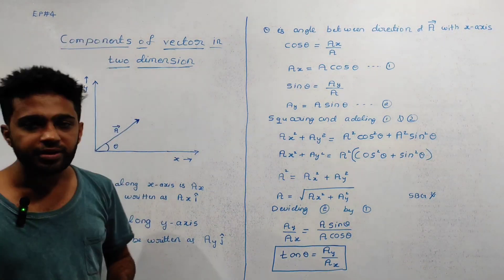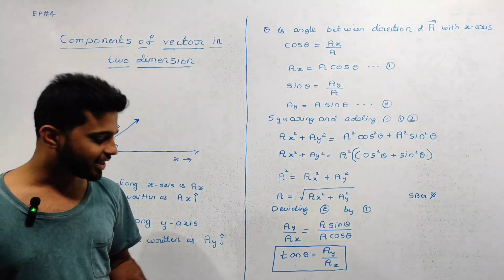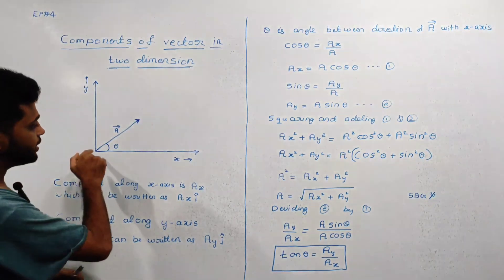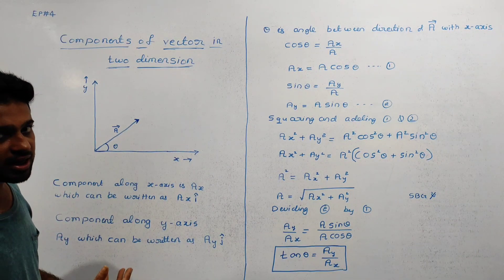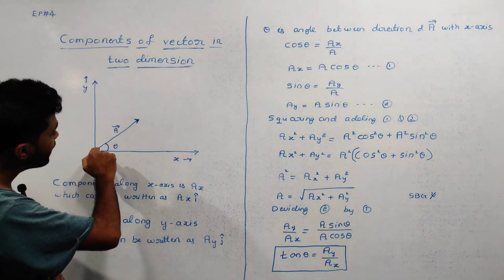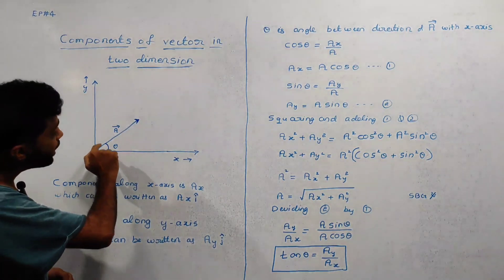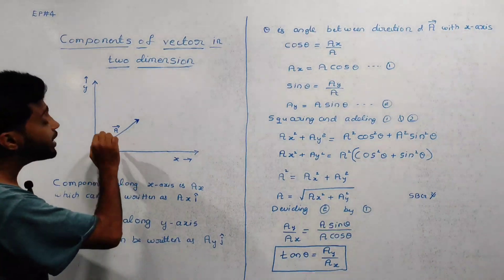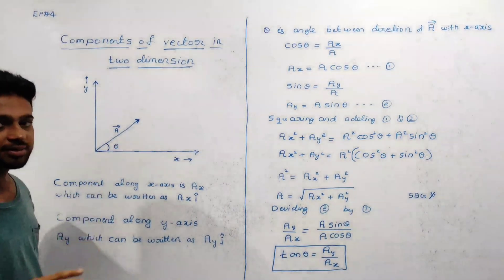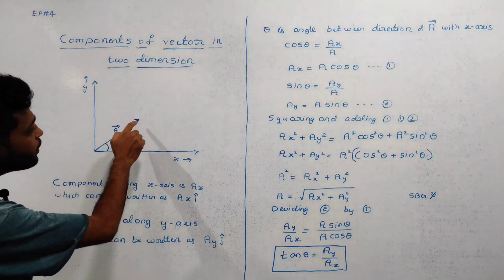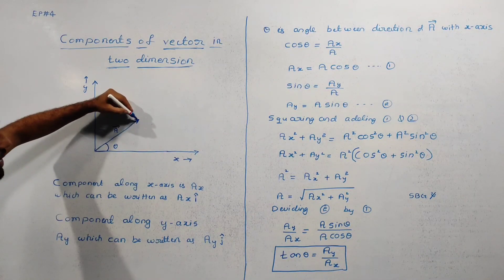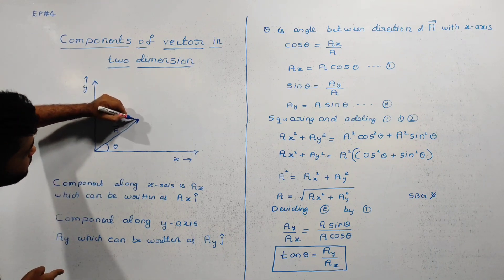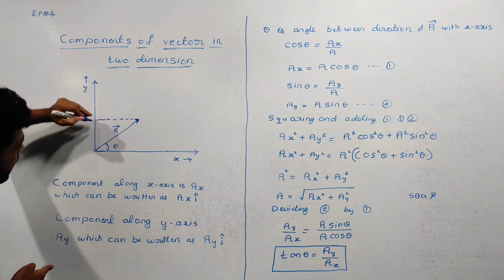Expression for components of vectors in two dimensions. If the x-axis and y-axis are two-dimensional, we can draw a vector in two dimensions with its tail at the origin. We can denote the vector as A and draw it parallel to the x-axis.